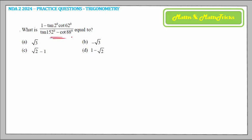What is the value of (1 - tan 2°) × cot 62° divided by (tan 152° - cot 88°)? You can see that the form of the question resembles the formula of cot for compound angle — either cot(a+b) or cot(a-b). We will find out. First, we will convert tan into cot.